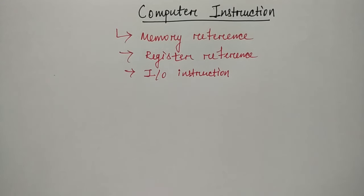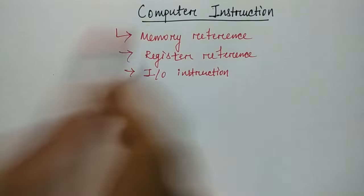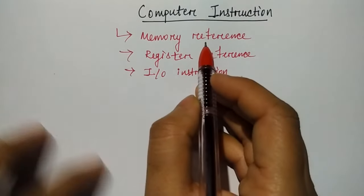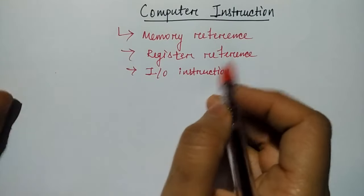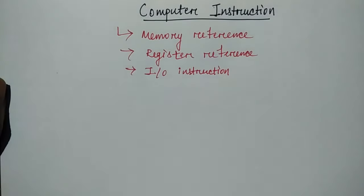So we have to go directly to the address to perform the operation which is referred by the opcode. So we have to follow the same instruction format for the computer instruction. And this is used for three things: memory reference, register reference, and I/O instruction.